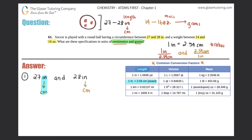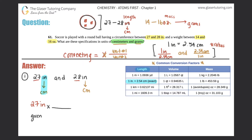We need to do this twice — convert 27 inches and 28 inches into centimeters. Starting with 27: we have 27 inches, and whenever we're converting we always multiply by a ratio. The given goes first, then we multiply by the ratio, with unit one on top and unit two on the bottom.